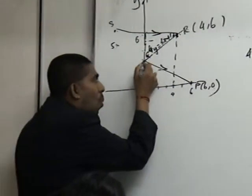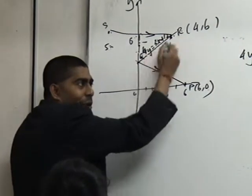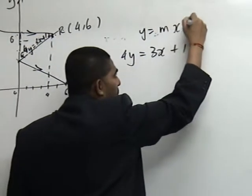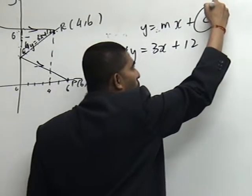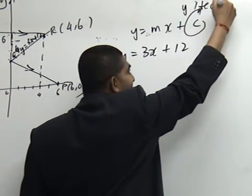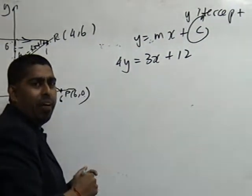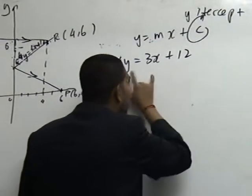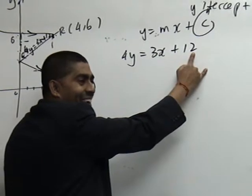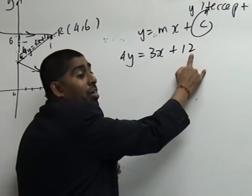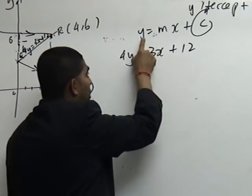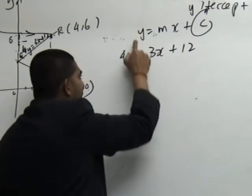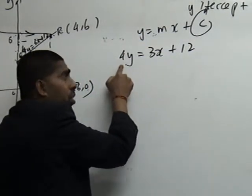Now, actually, what is this? Y intercept of this line. How do I find Y intercept? I change this form into Y equals to MX plus C. Remember, C is my Y intercept. Very good. So what do I do now? Many of you straight away, what is my Y intercept? 12. Wrong. This is what majority of people will do. Remember, in this form Y equals to MX plus C, what is the coefficient of Y? 1. But here is 4. You've got to change this.